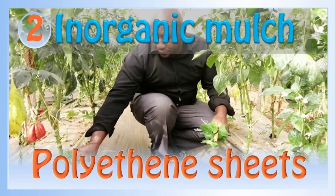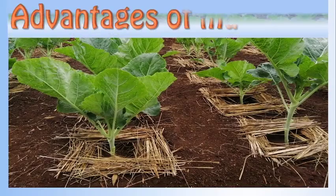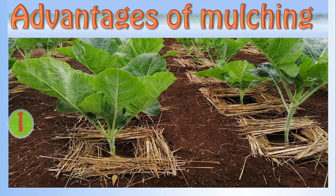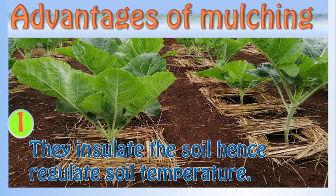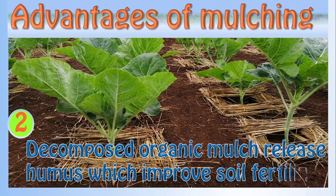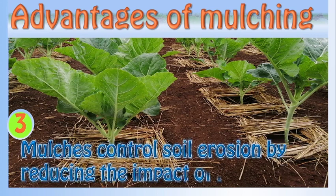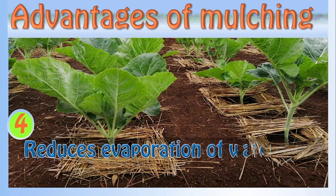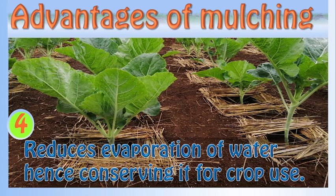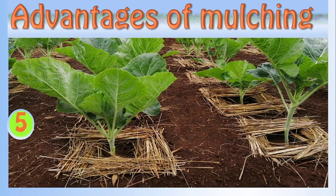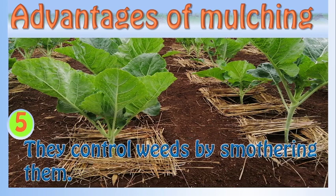We have looked at the meaning of mulch and the types of mulching materials. Let's now discuss their advantages and disadvantages. The advantages of mulching are: mulches insulate the soil, hence regulate soil temperature; decomposed organic mulch releases humus which improves soil structure; mulches control soil erosion by reducing the impact of raindrops; mulch reduces evaporation of water, hence conserving it for crop use; and they control weeds by smothering them.